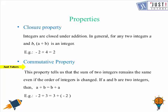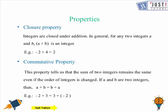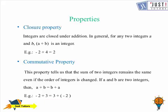The commutative property tells us that the sum of two integers remains the same even if the order of the integers is changed. If a and b are two integers, then a + b = b + a always. For example, (-2) + 3 = 3 + (-2). In both cases the answer is the same, which is 1. Both sides are equal to each other.